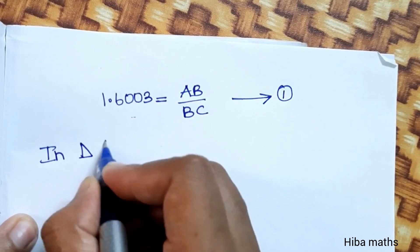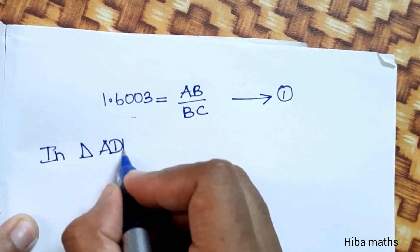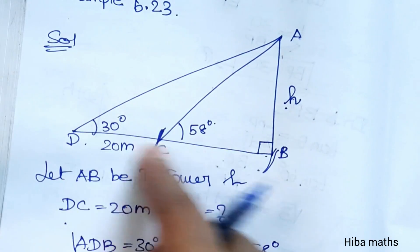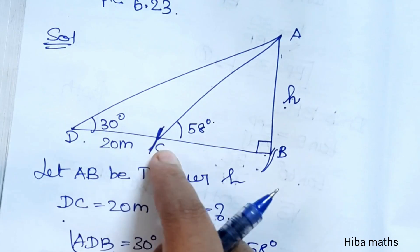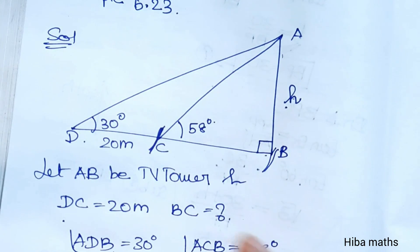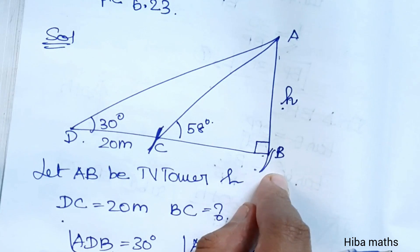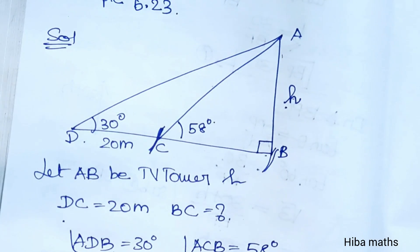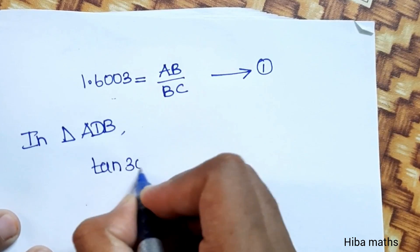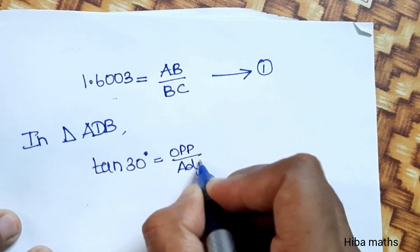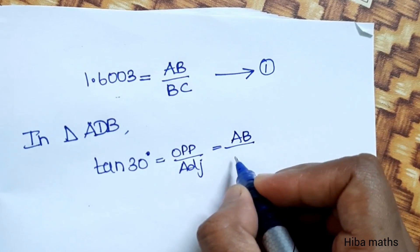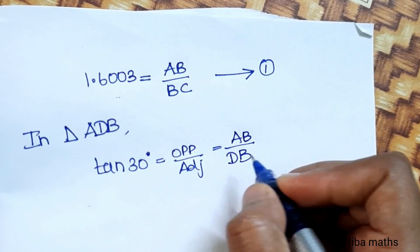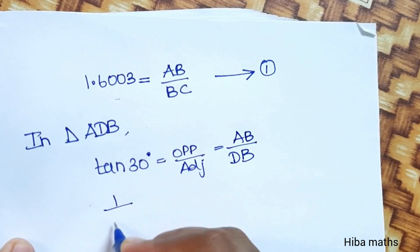Now consider the second triangle, triangle ADB. In this triangle, tan 30 degrees equals opposite side divided by adjacent side, where the opposite is AB and the adjacent is DB. DB is the full length, which equals DC plus CB, that is 20 plus BC. Tan 30 degrees equals 1 divided by root 3.